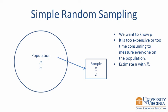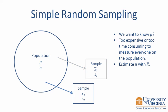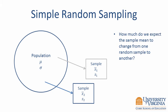For example, we use the sample mean, x-bar, to estimate the population mean, mu, and the sample standard deviation, s, to estimate the population standard deviation, sigma. However, given the role of random selection, our sample estimates will be different from one sample to another. This situation gives rise to the question: how much do we expect the sample mean to change from one random sample to another?